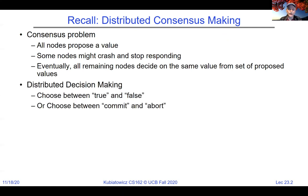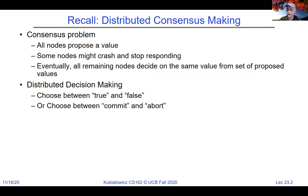There's a simpler version called distributed decision-making, where you choose between true and false, or commit and abort — one of two options. Essentially all the nodes participating in some protocol are collaborating and eventually coming up to exactly the same decision.